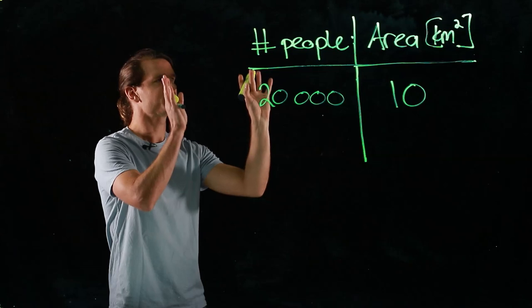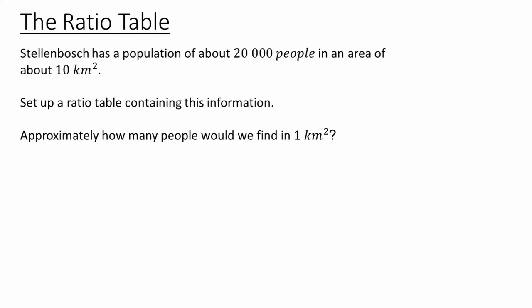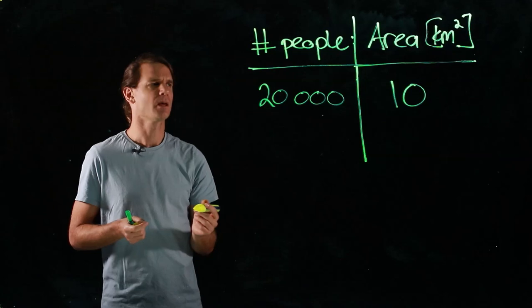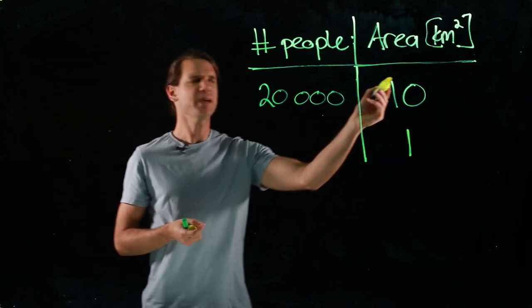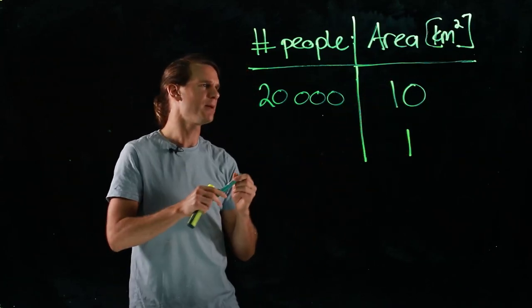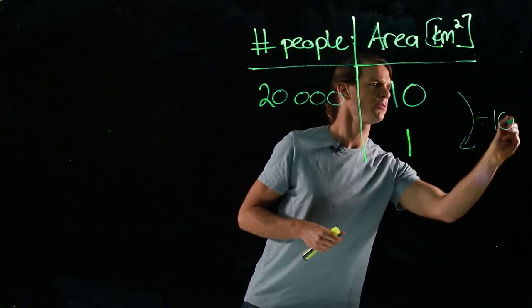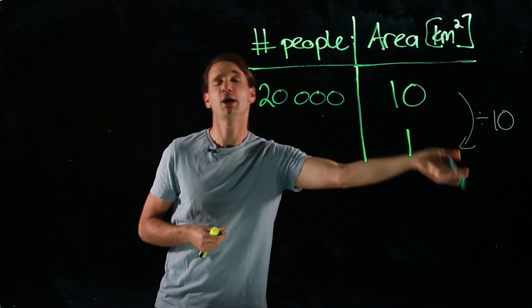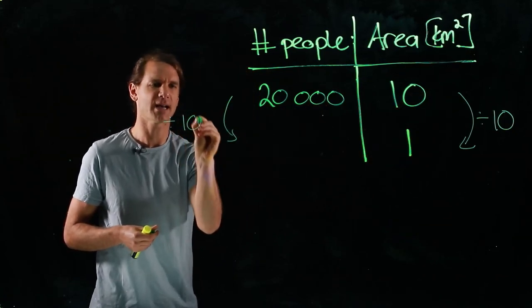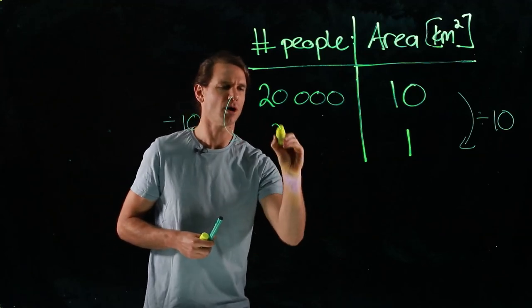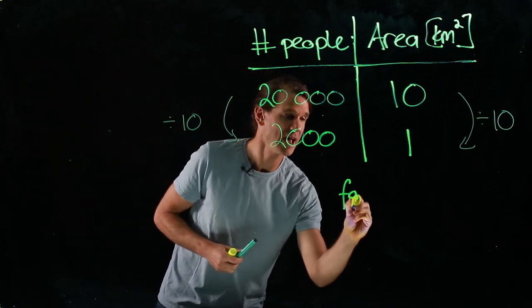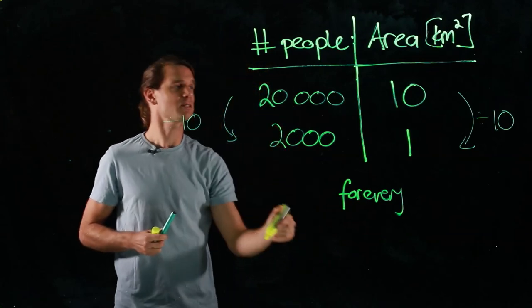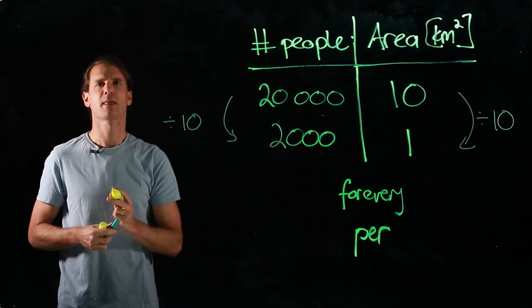This is how information is represented in a ratio table. The question asks us how many people we would find in one square kilometer. How do we get from 10 to 1? We divide by 10. The golden rule of the ratio table is: what you do to the right-hand side you do to the left-hand side. So we divide the left-hand side by 10 and land up with 2,000 people in one square kilometer — or 2,000 people per square kilometer.